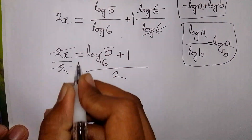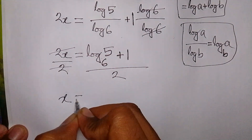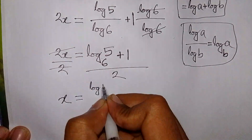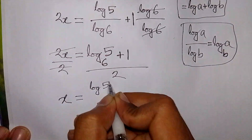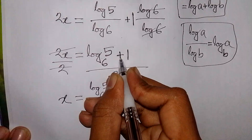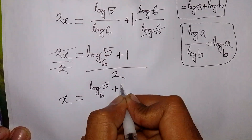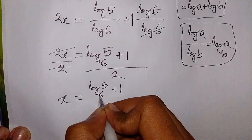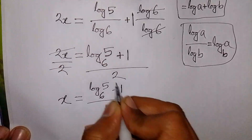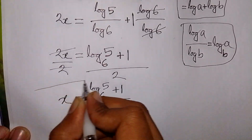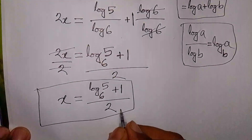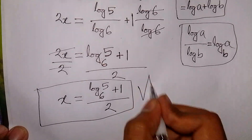So x will be equal to log base 6 of 5, plus 1, all over 2. This is the final answer.